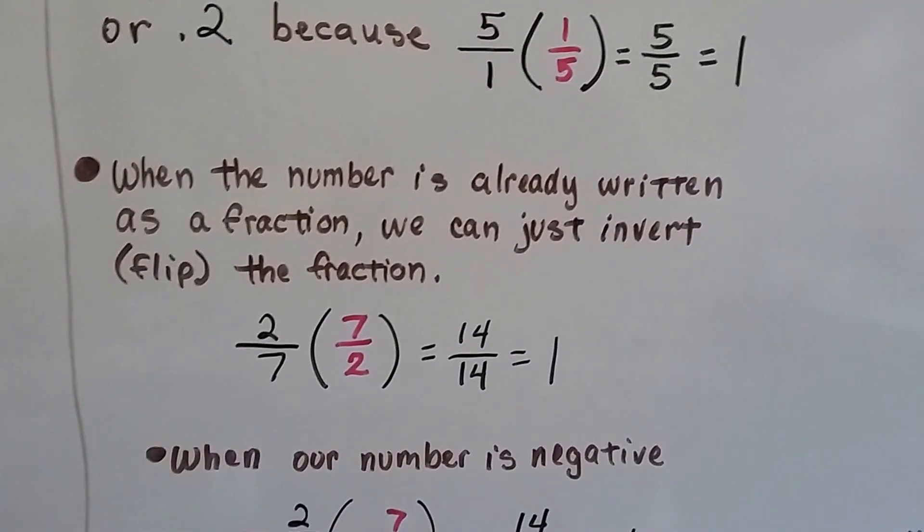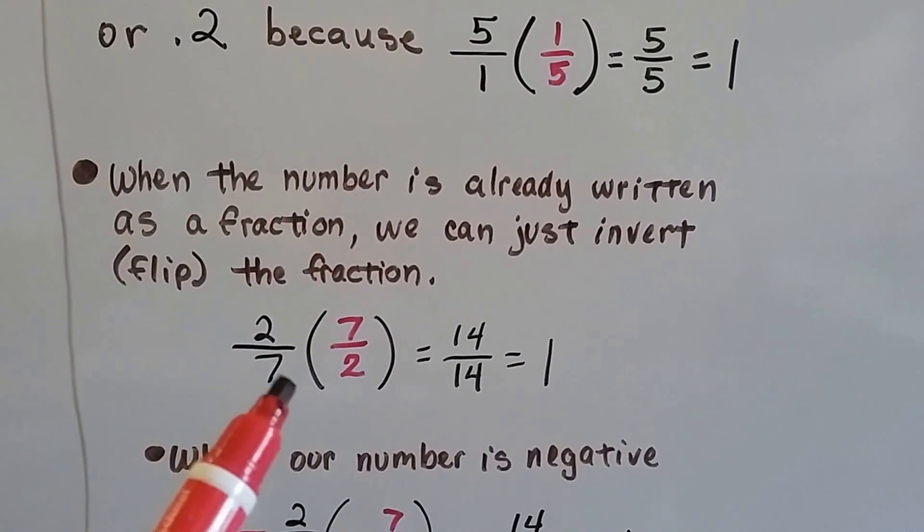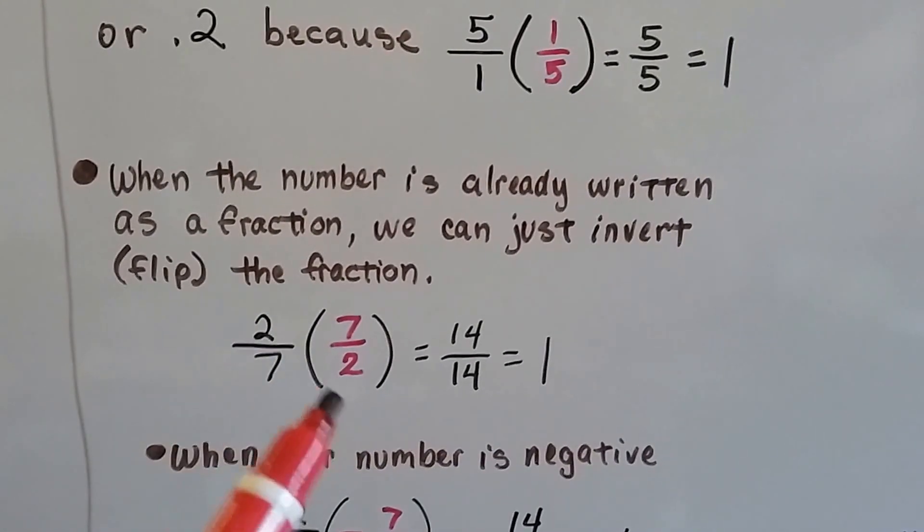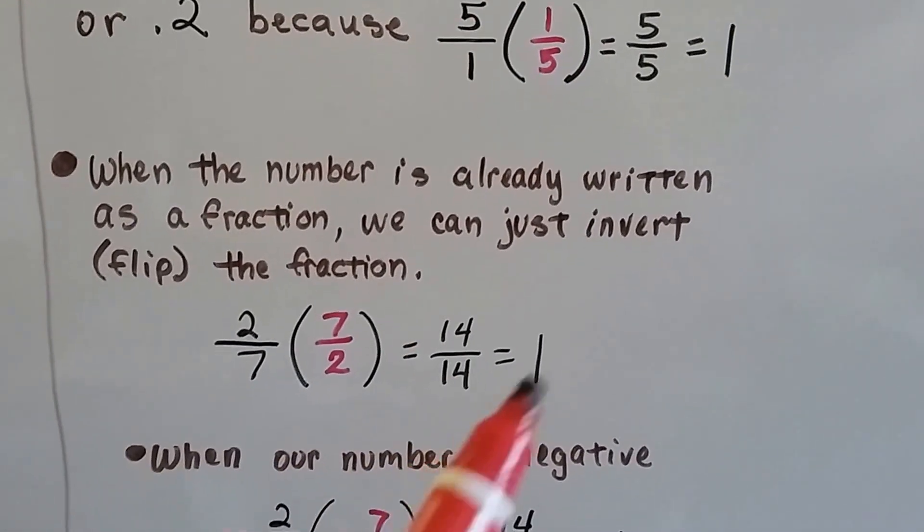When the number's already written as a fraction, we can just invert, flip the fraction. That's even easier. 2 7ths is 7 halves. That makes 14 over 14, which is 1.